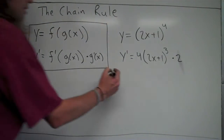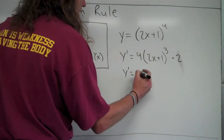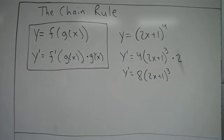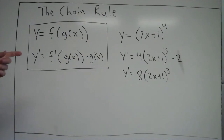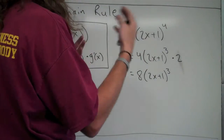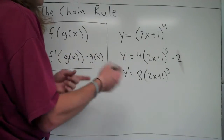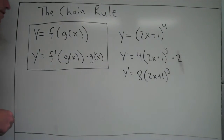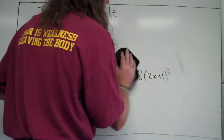So that is the derivative using the chain rule. Simplifying, 4 times 2 is 8, giving us 8 times (2x+1) cubed. Before the chain rule, we could have found this derivative, but we would have had to expand it out — multiply (2x+1) four times, which would have been a big pain, especially if you had it to the tenth or twentieth power. You could have expanded it, taken the derivative, and if you factored it back, you'd get the same result, but this is a lot quicker. That's one example where the chain rule comes in very handy.